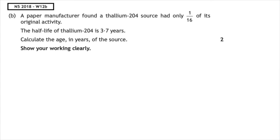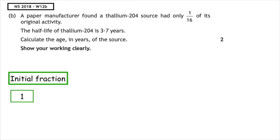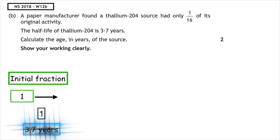This past paper question is from the National 5, 2018, written 12b. A paper manufacturer found a thallium-204 source only had a sixteenth of its original activity. The half-life of thallium is 3.7 years. Calculate the age in years of the source. We can see we're working in fractions, so the initial is one. If it underwent one half-life, which was a total of 3.7 years, it would have a half remaining.